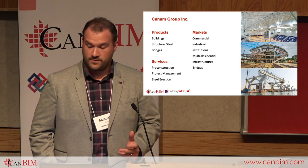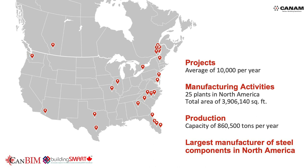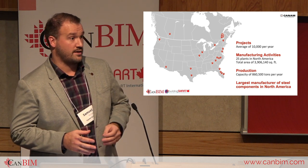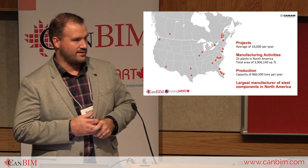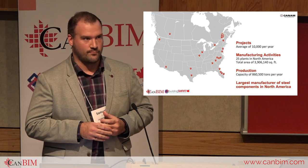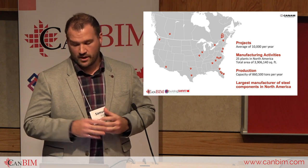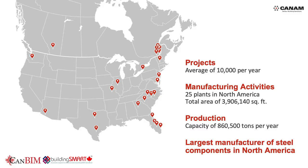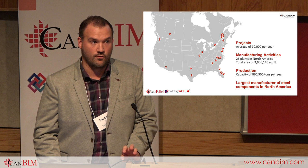On average, Can-Am delivers over 10,000 projects per year. We have 25 plants in North America, adding up to a manufacturing area of 3.9 million square feet. The plant locations are shown on the map. You may notice we have multiple plants on the East Coast. The Saint-Gedion plant, the original plant, serves this portion. We also provide steel joists for above 95% of the Atlantic market. Combined, we have an annual capacity of 860,500 tons of steel products, making us the largest manufacturer of steel components in North America.